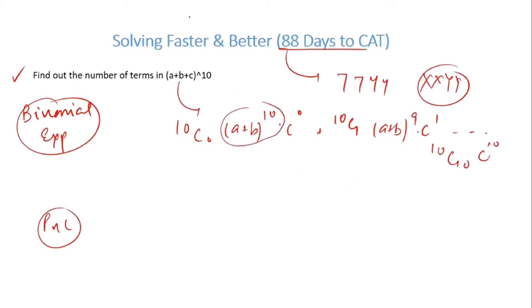So the number of terms here: (a+b)^n, we know that (a+b)^n will have n+1 terms. So this will have 11 terms, this will have 10 terms, so on and so forth, going on till the last term.